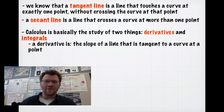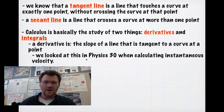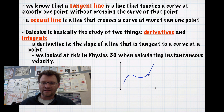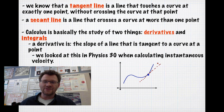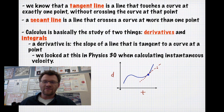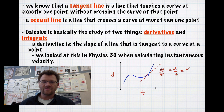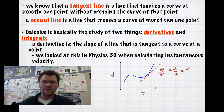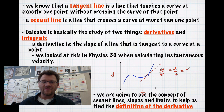A derivative is the slope of a line that is tangent to a curve at a specific point. We looked at this in Physics 30 when talking about instantaneous velocity. If we had a curve and wanted to find the velocity at exactly one point, we needed to physically draw a tangent line on a displacement-time graph. That tangent line gives us the slope — delta y over delta x — where delta y is your distance d and delta x is your time t, giving us the actual velocity at that specific point. From here on, we'll use calculus — the concept of secant lines, slopes, and limits — to find what we call the definition of the derivative.